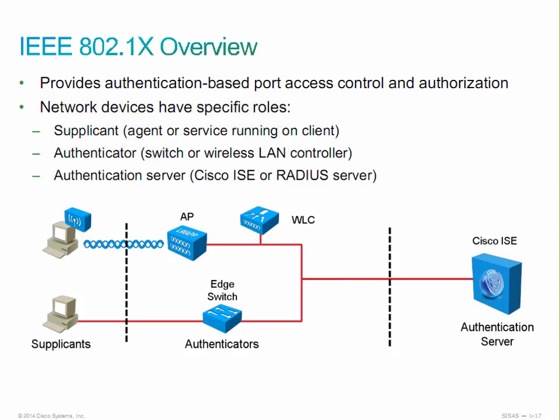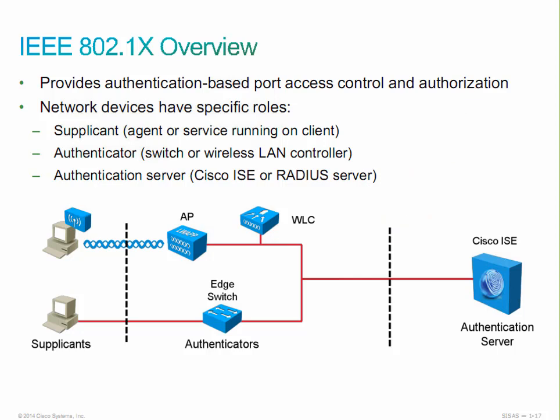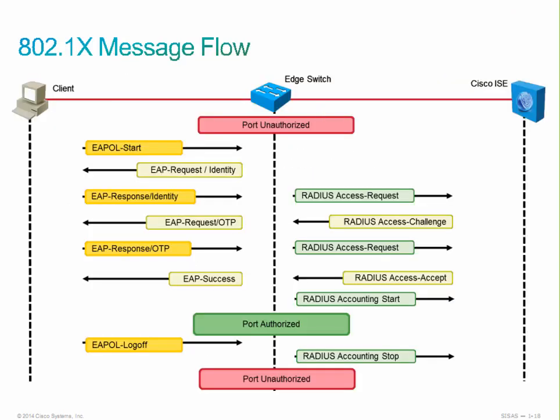The EAPOL protocol operates at the data link layer. It's encapsulated into Ethernet 2 and has an EtherType of hex 888E. If you're troubleshooting and identifying different communication happening in the network, you're going to see a type field of 888E. You definitely need to know the different components of 802.1X — that's on the test — but it's pretty straightforward.